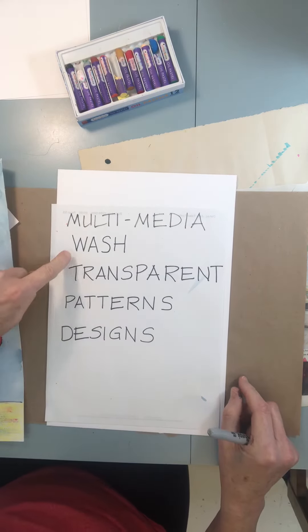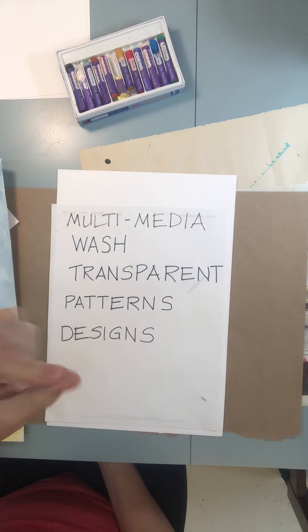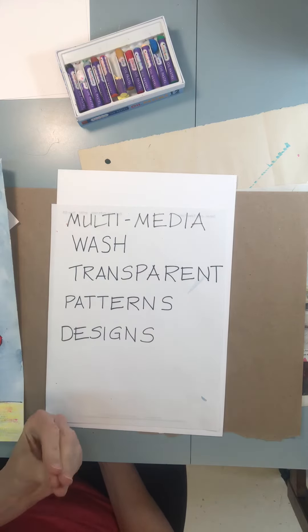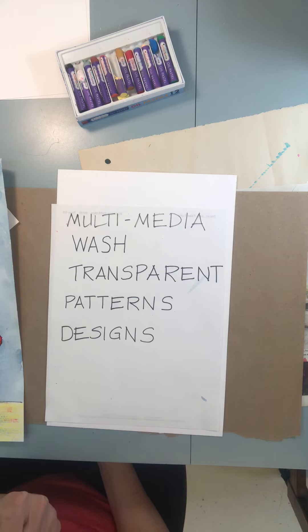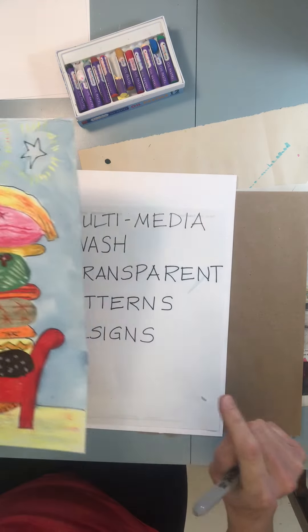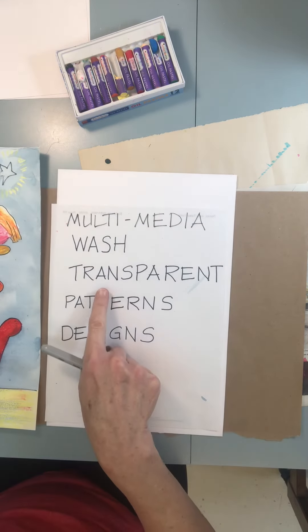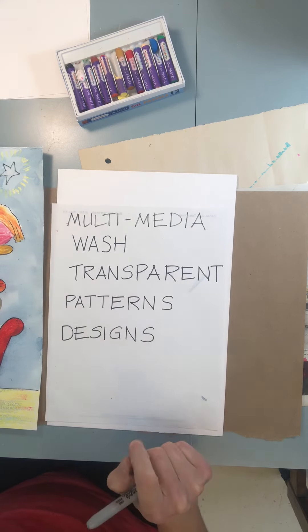The last time we worked together, we made a wash as well. That's when you use a tiny bit of paint and a lot of water. When you go over oil pastel, the oil pastel repels the water and you can still see your beautiful strokes underneath. This means that the paint is transparent, or you can see through it.